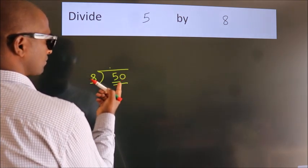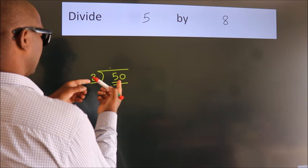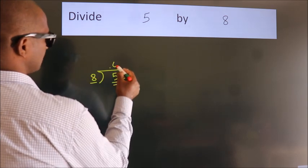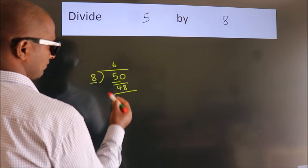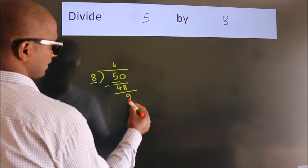A number close to 50 in the 8 table is 8 times 6, 48. Now we should subtract. We get 2.